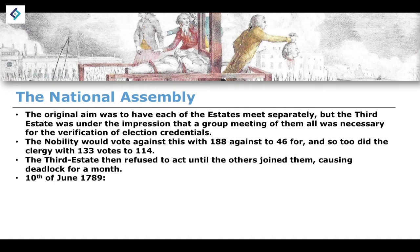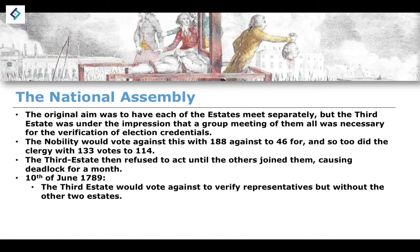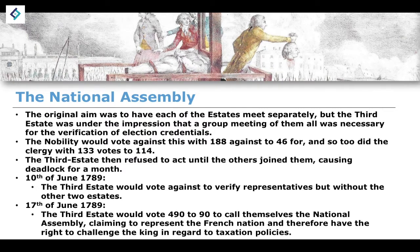Moving on from the 5th of May, we reach the 10th of June 1789, when the Third Estate voted to verify their representatives without the other two estates. Then, a week later on the 17th of June 1789, the Third Estate voted by a majority of 490 to 90 to call themselves the National Assembly, claiming to represent the French nation and therefore having the right to challenge the king regarding taxation policies.